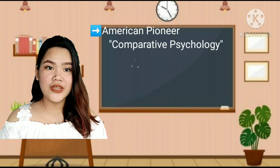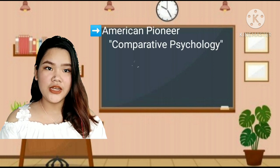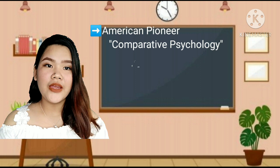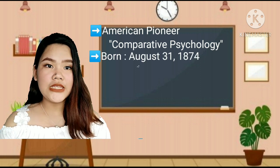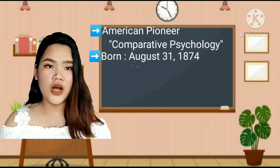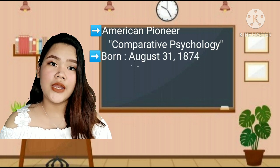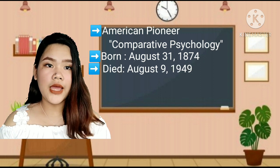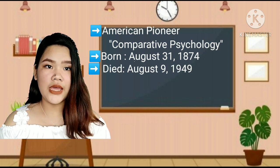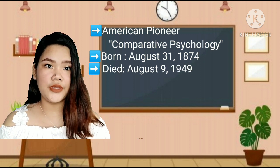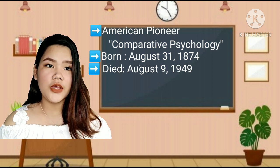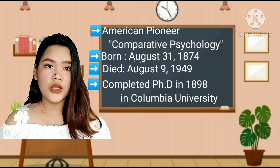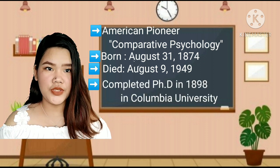Edward Thorndike is an American pioneer in comparative psychology. Thorndike was born on August 31, 1874, in Williamsburg, and died on August 9, 1949. He completed his Ph.D. in 1898 at Columbia University.